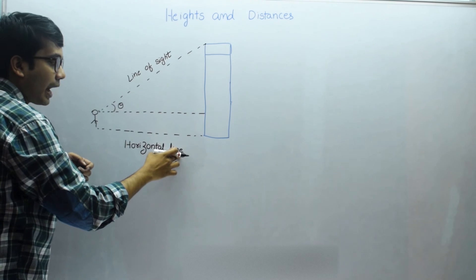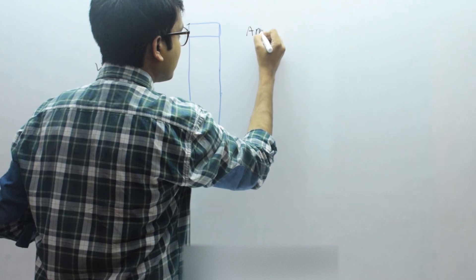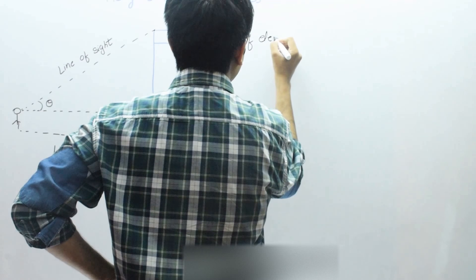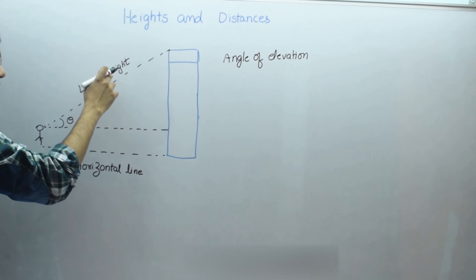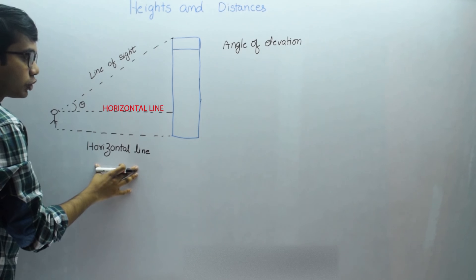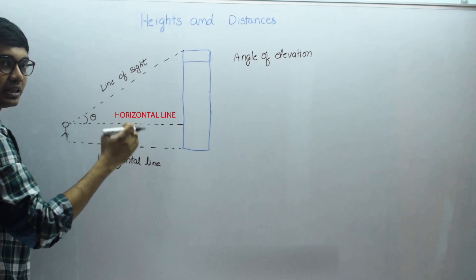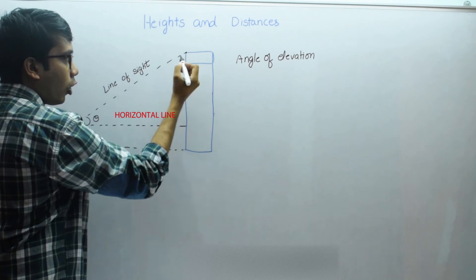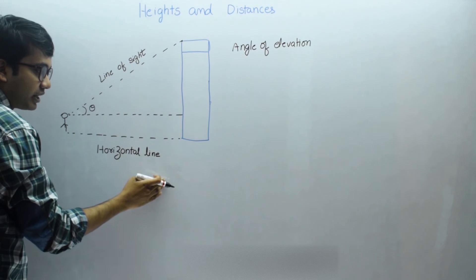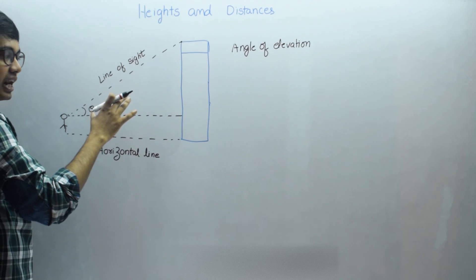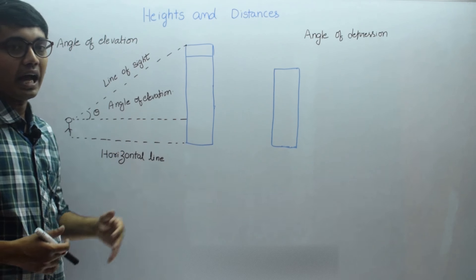The angle of elevation is defined when the point being viewed is above the horizontal line. The angle made by the line of sight with the horizontal line — when the object being viewed is above the horizontal line — is called the angle of elevation. So this theta will be the angle of elevation.